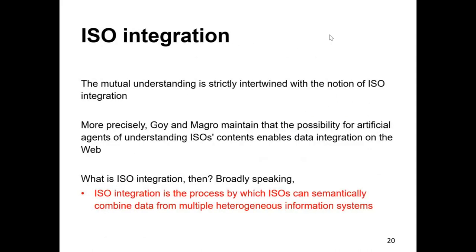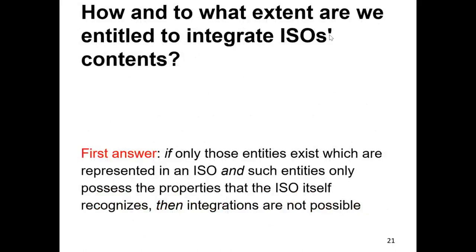My talk is also about integration. We should define the meaning of integration in the debate of information system ontologies, because ISOs integration is strictly intertwined with the notion of mutual understanding. Goy and Magro maintain that the possibility for artificial agents to understand ISOs contents enables data integration on the web. Broadly speaking, ISO integration is the process by which information system ontologies can semantically combine data from multiple heterogeneous information systems. The central question is: how and to what extent are we entitled to integrate ISOs contents?